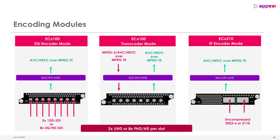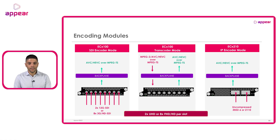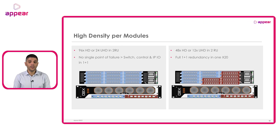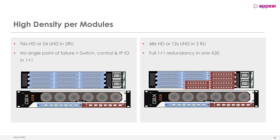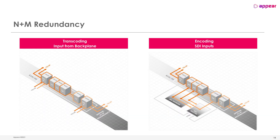The density for all these modules is up to 2 Ultra HD or 8 Full HD per slot. This leads to the following maximum capacities per 2RU X20 box: if choosing no single point of failure with switch, control, and IP input/output in full 1+1, we can fit up to 12 encoding slots in the back — meaning up to 96 HD or 24 Ultra HD in just 2 rack units. However, if choosing a real full 1+1 in just one X20, we fit half the modules for main and half for backup, meaning a total of 48 HD encoders or 12 4K Ultra HD encoders. For SDI inputs, the SDI sources must be rerouted to the spare externally, which APIR manages automatically via the required third-party SDI router.